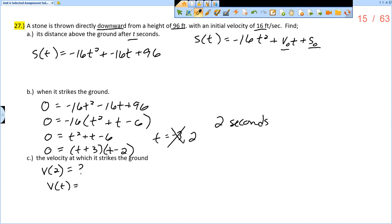So first of all, I need to find v of t, so the derivative of position. So if I have negative 16t squared plus negative 16t plus 96, the derivative would be negative 32t minus 16.